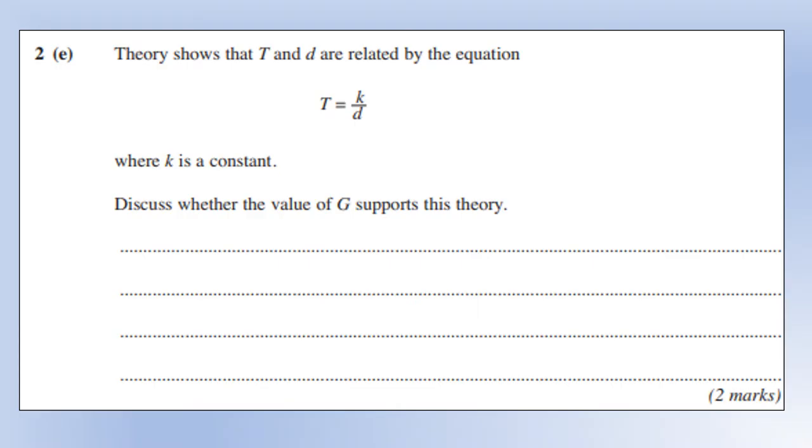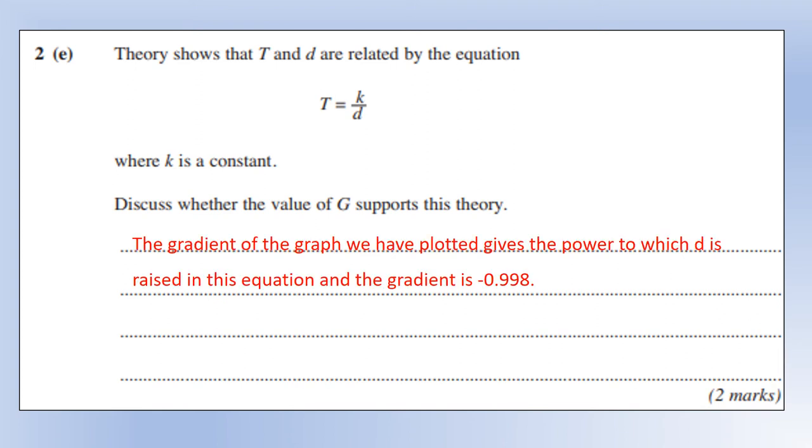Okay, so theory shows that t and d are related by the equation t equals k over d, where k is a constant. Discuss whether the graph supports this theory. So we've got a log t versus log d graph. So the theory says that this graph should have a gradient of minus one. So the gradient from a log versus log graph tells us the power of d in the equation.